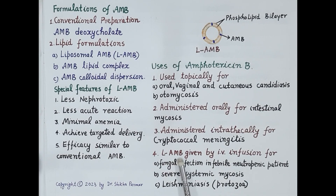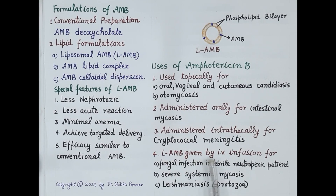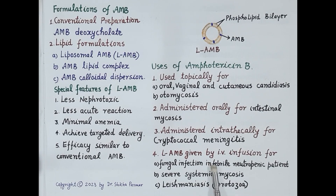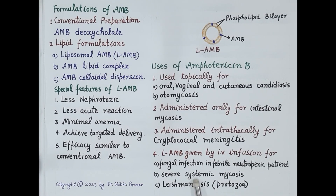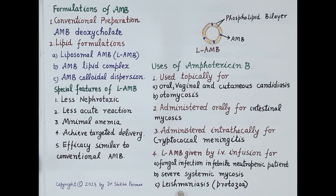Liposomal amphotericin B is given by intravenous infusion for fungal infections in febrile neutropenic patients not responding to antibacterial antibiotics. It is also used for severe systemic mycosis — severe fungal infections of internal organs — and for the treatment of leishmaniasis.